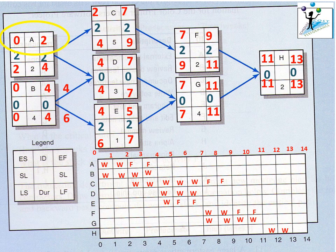This completes the problem. We learned how to perform a forward pass and a backward pass, used this information to identify the critical path, and then transferred the information onto a bar chart or Gantt chart that we can use to schedule the project.